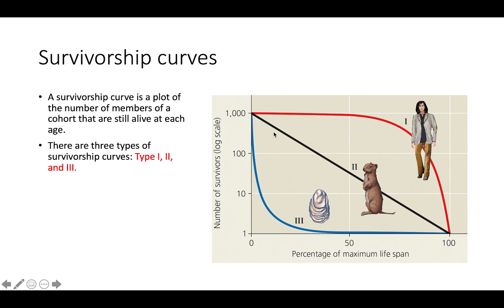For Type II organisms, you have a constant rate of death. So it doesn't really matter at what point in the maximum lifespan an individual organism is - they're still pretty much equally as likely to die or survive as they are at any other point in their lifespan.